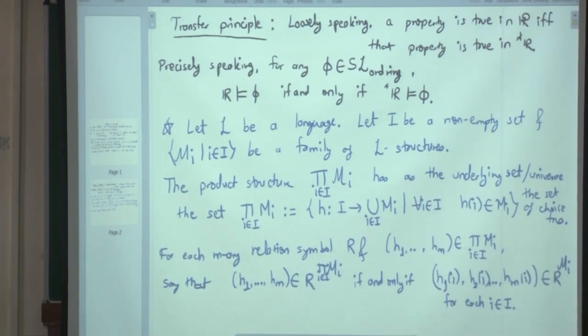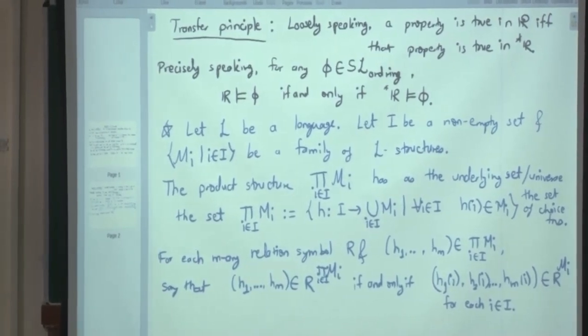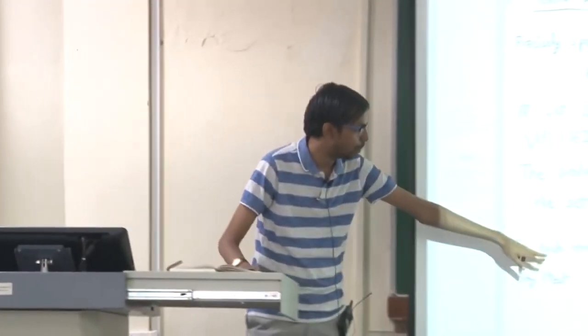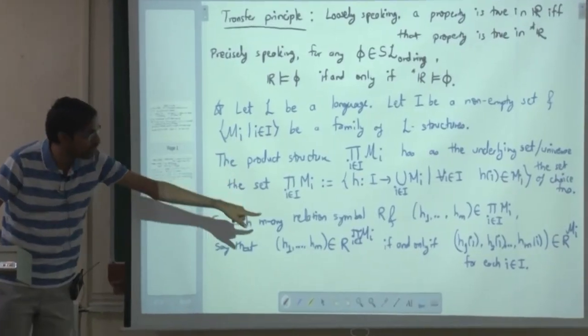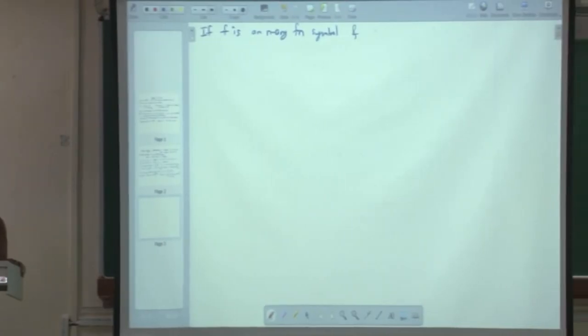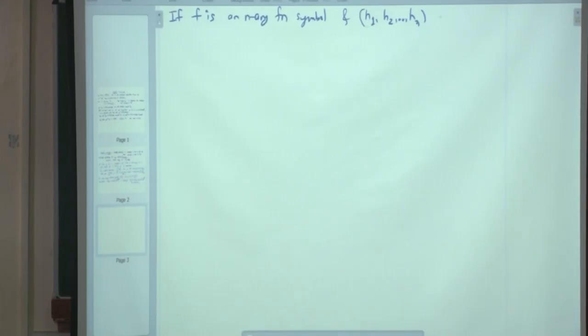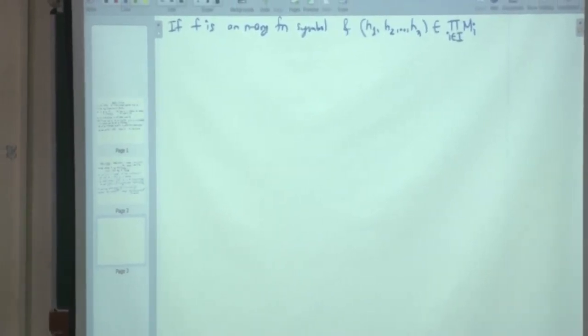This is not difficult, but it takes time to get used to it. A tuple of choice functions is in the interpretation of the relation symbol in the product structure if and only if, for each i, the individual components are in the interpretation of R. Now, if F is an n-ary function symbol and H_1, H_2, ..., H_n belong to the product of M_i —